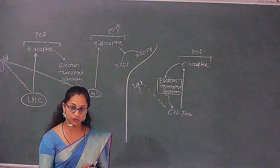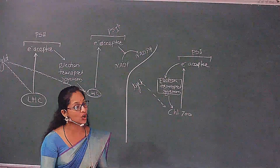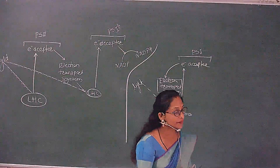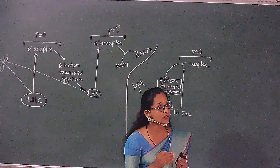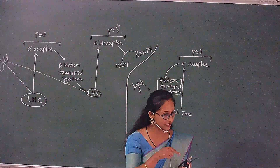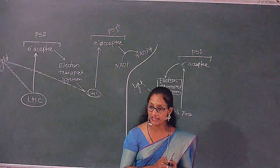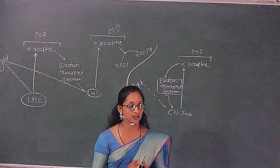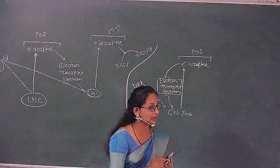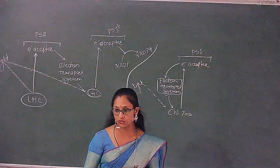Yesterday we covered photophosphorylation, in case of cyclic as well as non-cyclic. What is meant by cyclic phosphorylation? Electrons — where they are emitted from, electrons again enter there. It is called cyclic type of phosphorylation. In non-cyclic, where electrons are emitted from, electrons do not enter there again — it is called non-cyclic type of photophosphorylation.